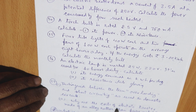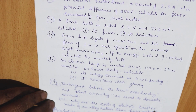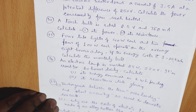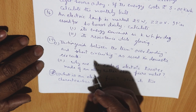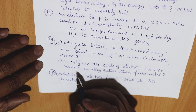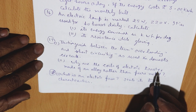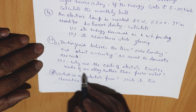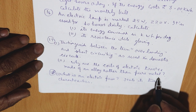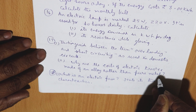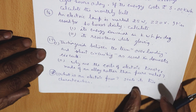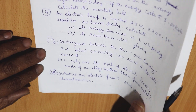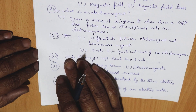Why are the coils of electric toasters made of an alloy rather than a pure metal? What is an electric fuse — state its two characteristics?